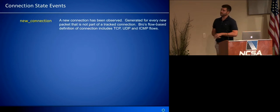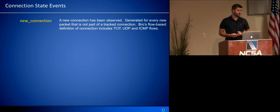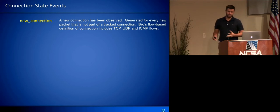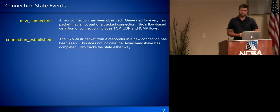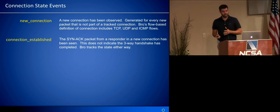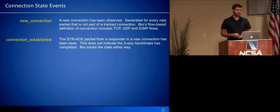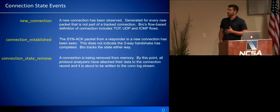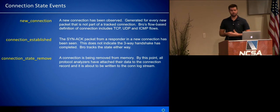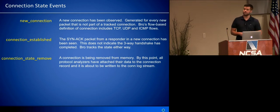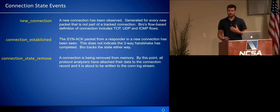The next category of events is connection state events. New connection is an event triggered when BRO observes a new connection it wasn't previously tracking — not much is known about it at this point. When BRO sees the SYN-ACK in response to the initial SYN in a TCP session, it triggers the connection established event — notably, this is not the completion of the three-way handshake, but from this point BRO is tracking the connection state. The connection state remove event is when BRO has finished its analysis of the communication and all protocol analyzers have completed their work and populated all the metadata.